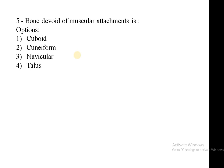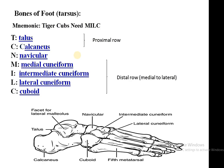Another anatomy question from the exam: which bone is devoid of muscular attachment? The options are bones of the foot. There are seven tarsal bones; the mnemonic is 'Tiger Cubs Need MILC': T for talus, C for calcaneum, N for navicular, M for medial cuneiform, I for intermediate cuneiform, L for lateral cuneiform, and C for cuboid.